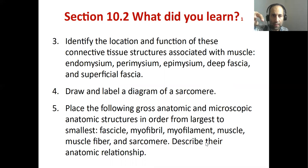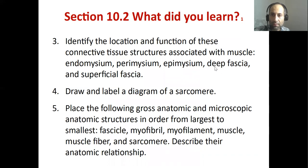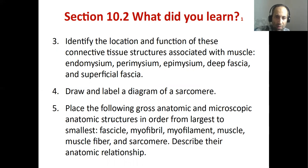To review: endomysium is around each individual muscle fiber; perimysium around each muscle fascicle; epimysium across the entire body of muscle. Deep fascia is dense connective tissue; superficial fascia is made up of areolar tissue and fat. To place structures from largest to smallest: muscle, then fascicle, then muscle fiber, then sarcomere, and within the sarcomere are myofibrils made up of myofilaments. That is the order.